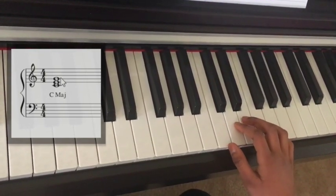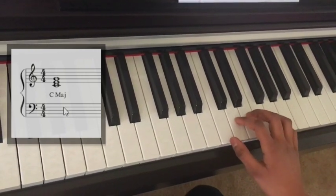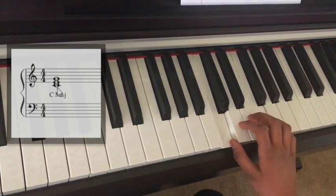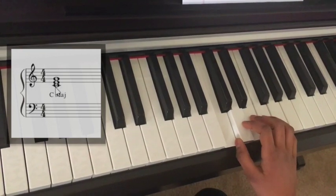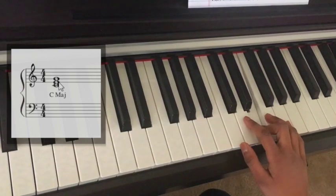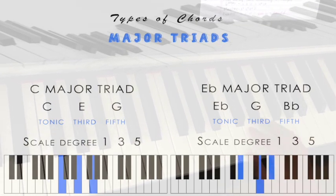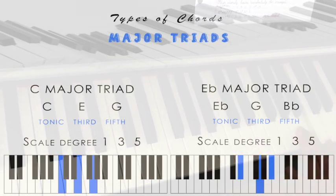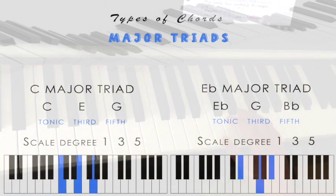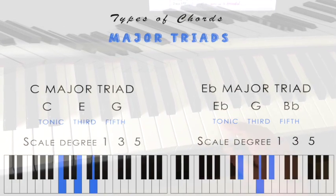You could also look at this chord by seeing the scale degrees. The tonic would be scale degree number one, because it's the first note of the scale. The third would be scale degree number three, or E. And the fifth would be G, so it's the fifth note. If you're having trouble with scale degrees, just play the C major scale. You'll find that C is the first note or first scale degree, D is the second, E is the third scale degree, and so forth.